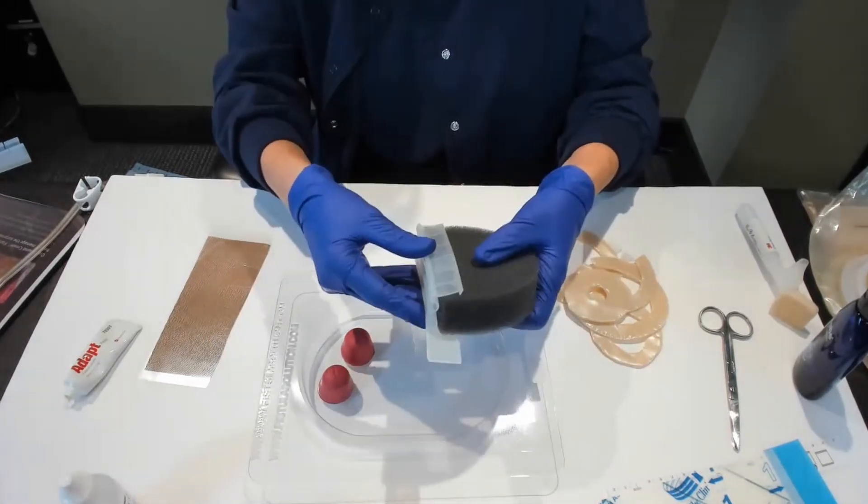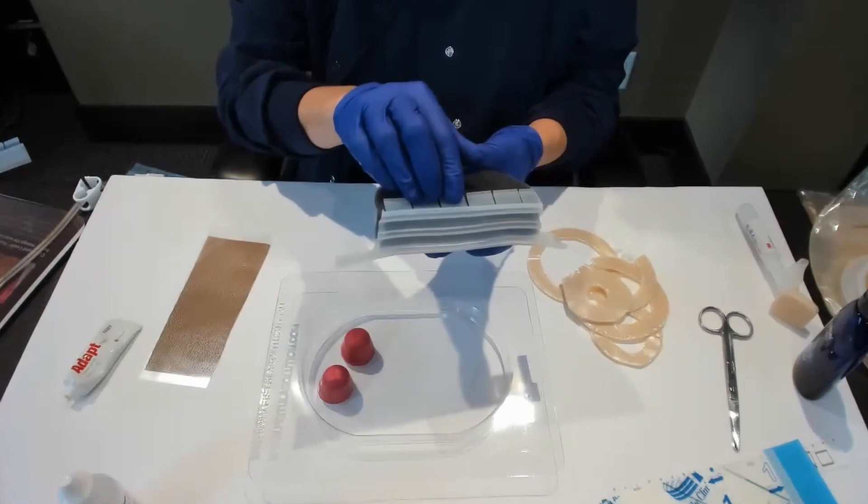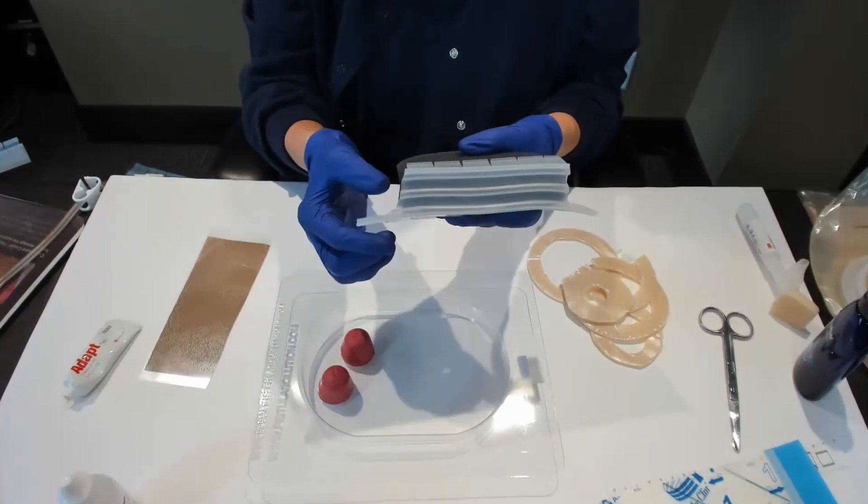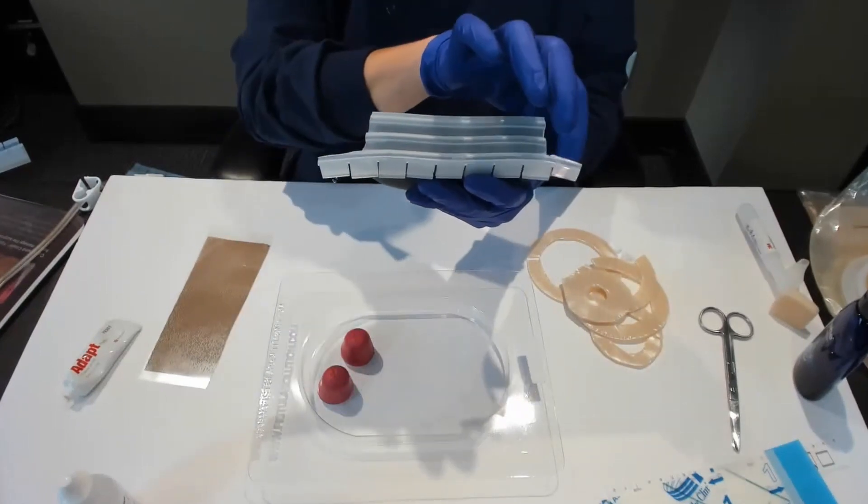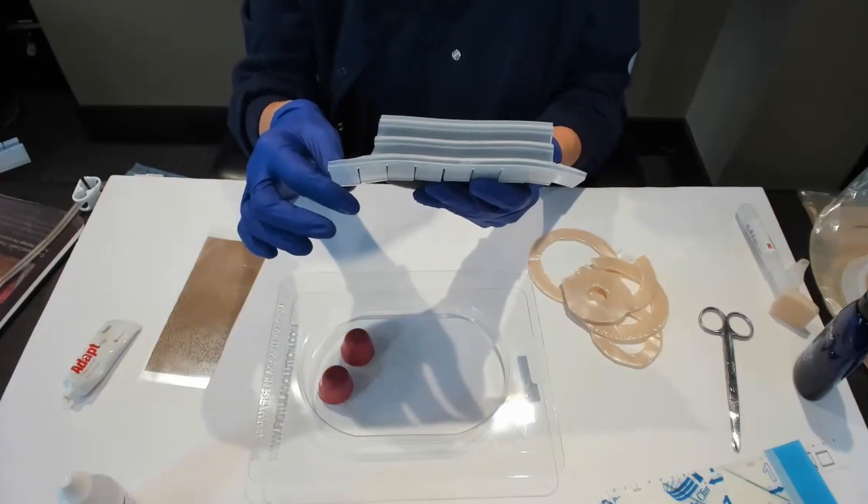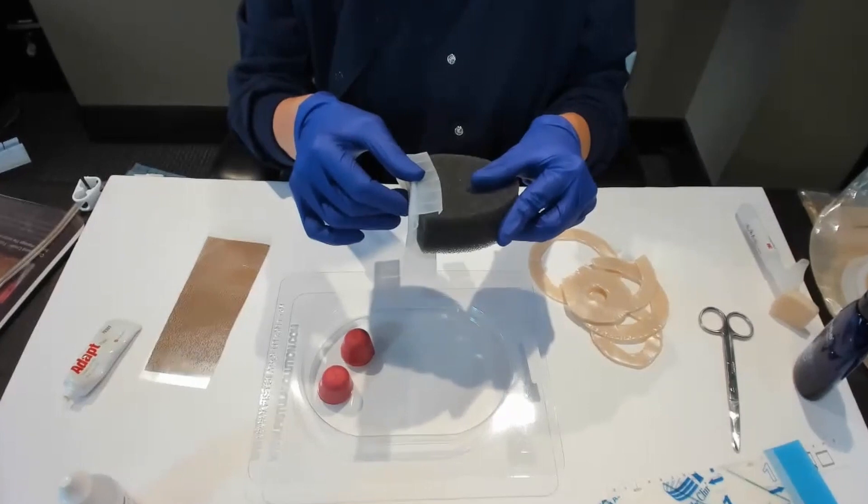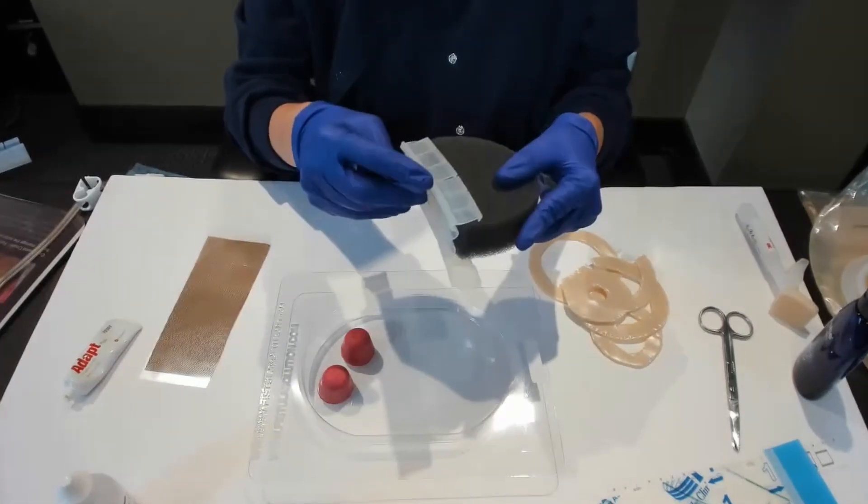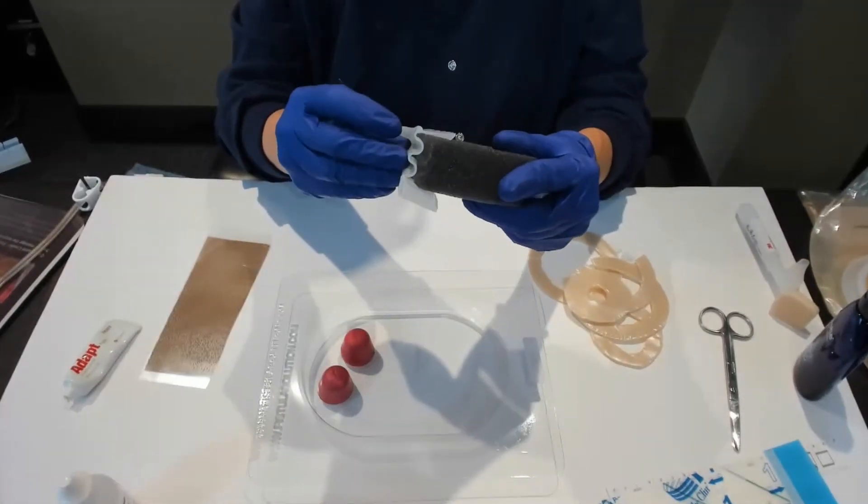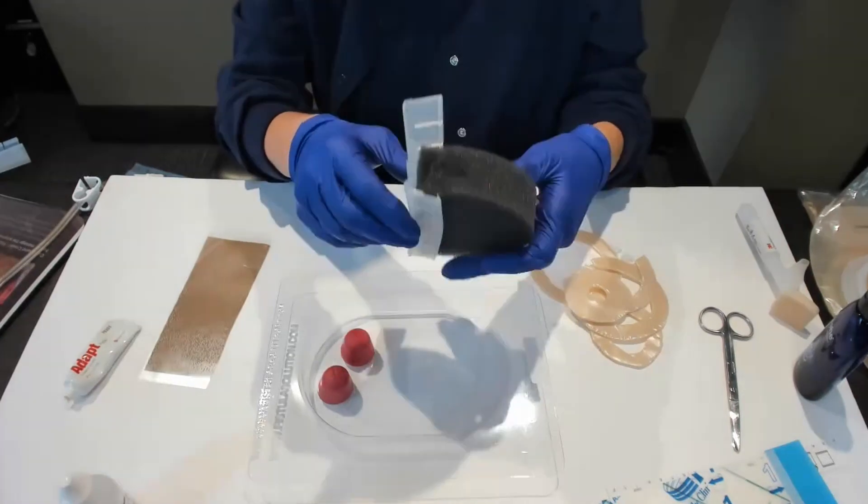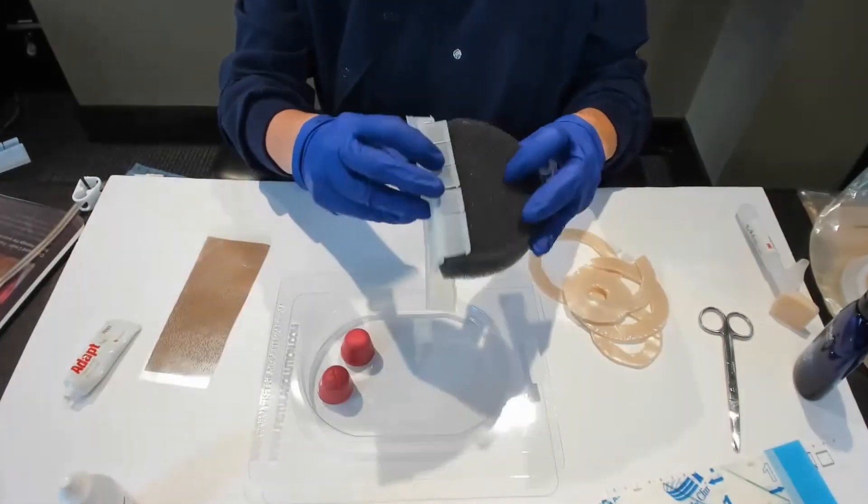I've trimmed the isolator strip so that the petals are still going to sit on the wound edge. The isolator strip obviously is going to isolate the negative pressure foam. The little ridge is on the bottom part, which is going to go against the wound.